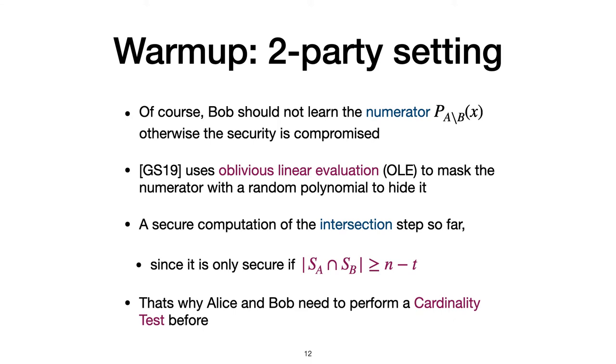So far, we only discussed the second part, which is how to compute an intersection. It can only be proved when the intersection size is larger than N minus T, otherwise the proof of security will fail. That's why they still require a cardinality test to make sure when they compute an intersection its cardinality is large enough.